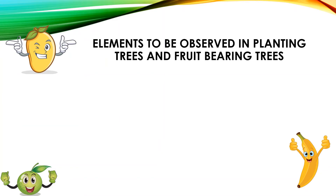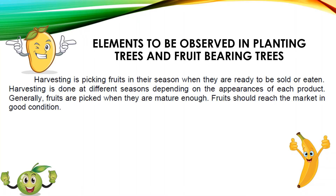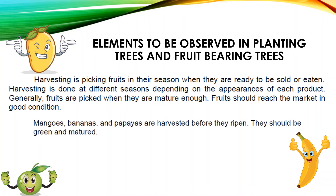Now let's consider the elements to observe in planting trees and fruit-bearing trees. Harvesting is picking fruits in their season when they are ready to be sold or eaten. It is done at different seasons depending on each product. Generally, fruits are picked when they are mature enough and should reach the market in good condition. For example, mangoes, bananas, and papayas are harvested before they ripen — they should be green and matured.